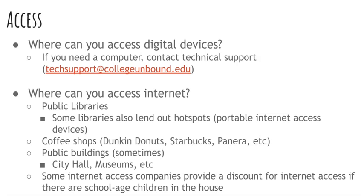There are also public buildings — though this isn't always the case, you can often find out. A lot of city halls and museums have free Wi-Fi, so keep an eye out for those places. Additionally, in some cities and towns, internet access companies provide a discount if there are school-aged children in the house. So if you have school-aged children, there may be an opportunity to get that discount and use the internet at a cheaper rate.